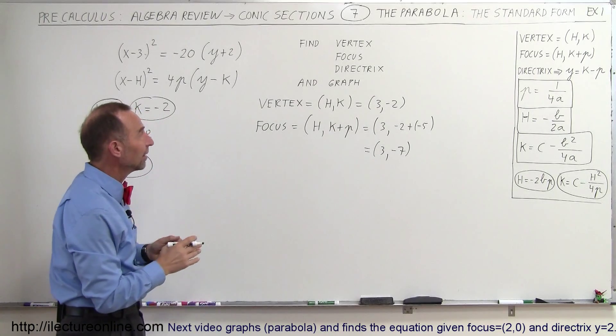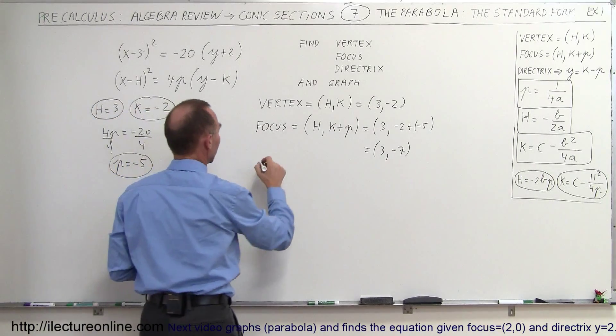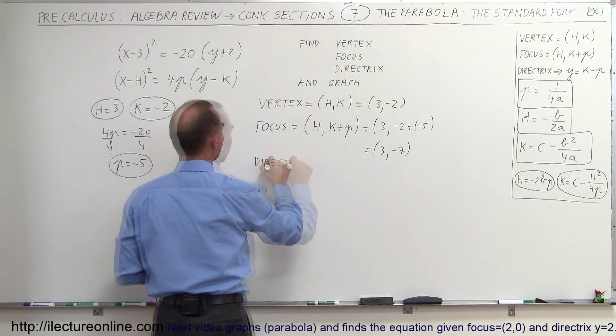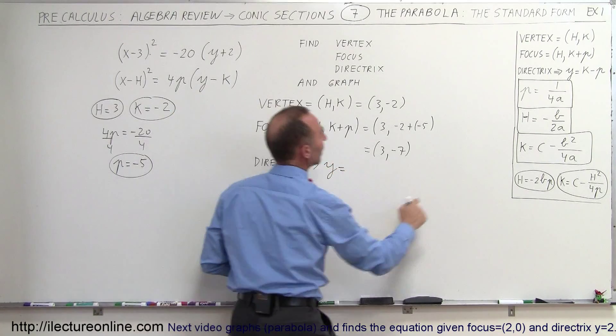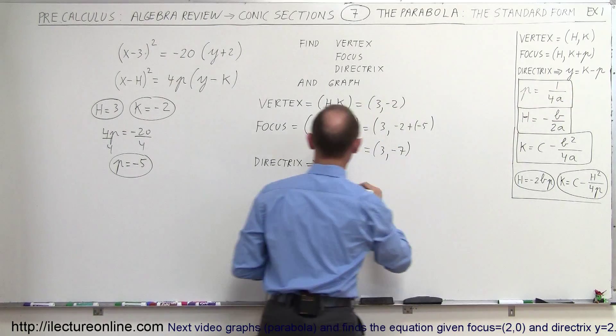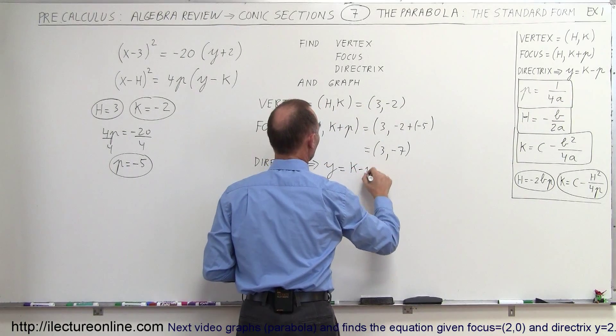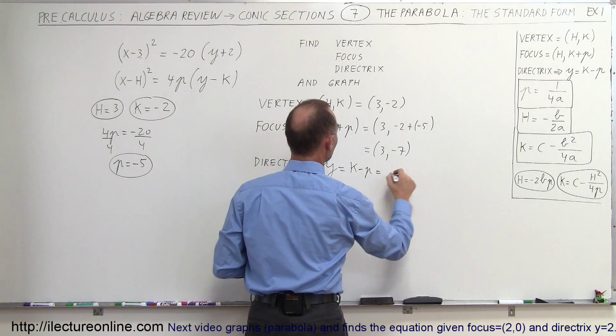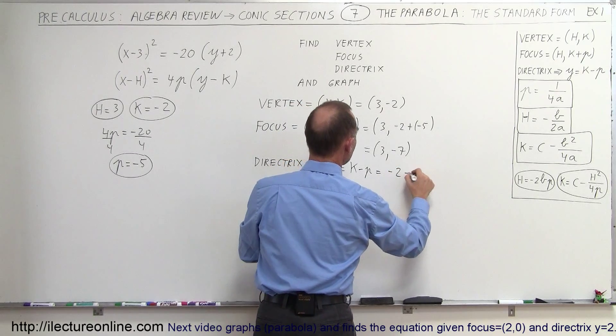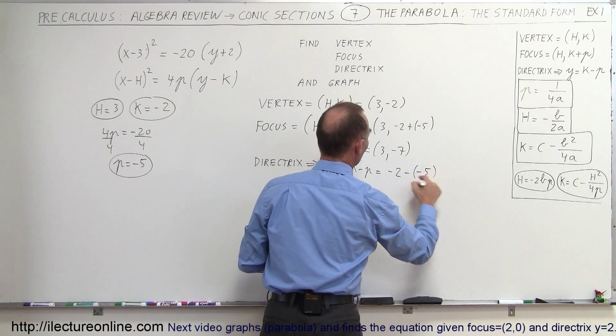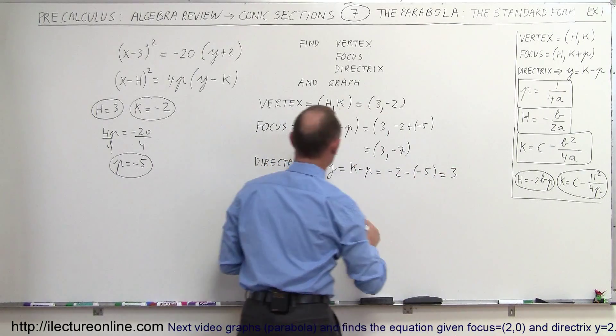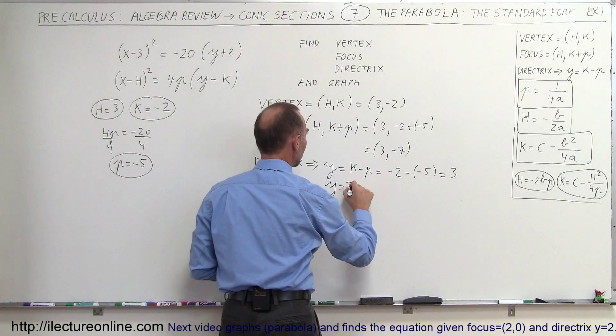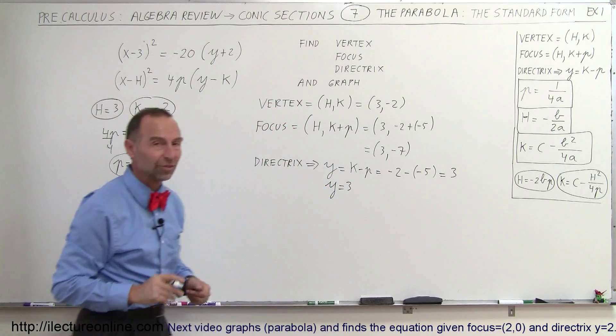Now we want to find the equation for the directrix. And for the directrix, we can say that y is equal to, and here we go, it's k minus p. So k minus p, that's equal to k is minus 2. And p is a minus 5. So minus times a minus gives me a plus. That's minus 2 plus 5, which is equal to 3. So therefore we know that y equals 3 is the equation of the directrix.